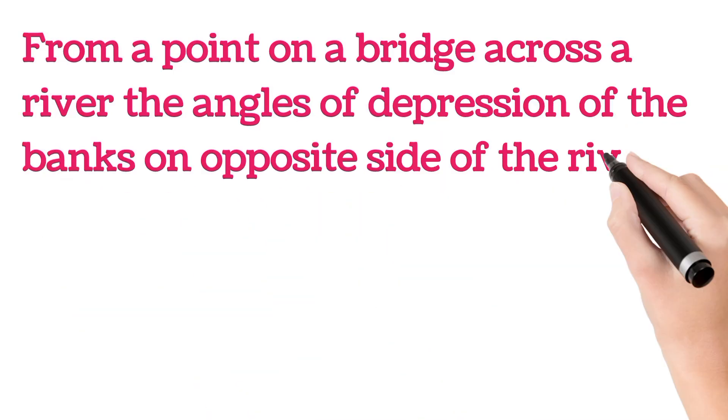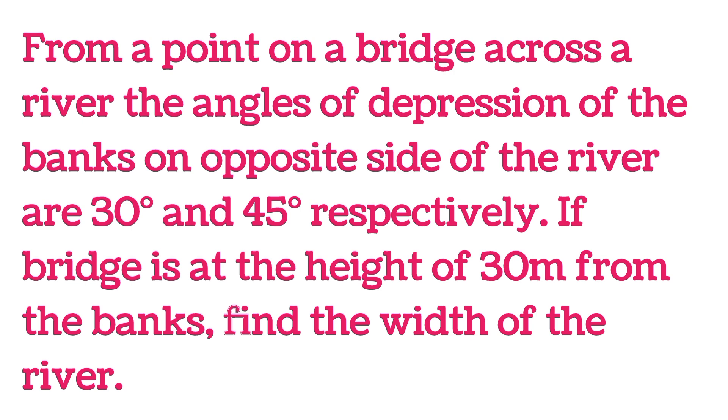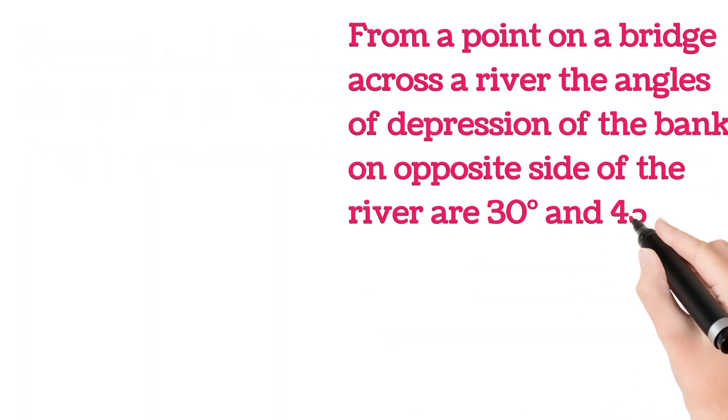Hello everyone, so in this question it is given: from a point on a bridge across the river, the angle of depression of the banks on the opposite side of the river are 30 degrees and 45 degrees respectively. If the bridge is at the height of 30 meters from the banks, then we have to find the width of the river. So let's see how to solve this question. First of all, we will try to understand what is given in the question.